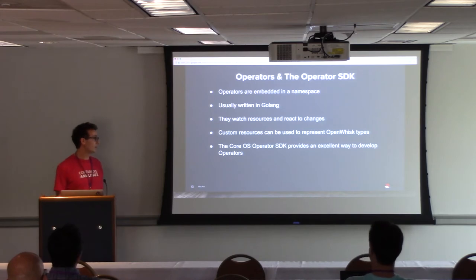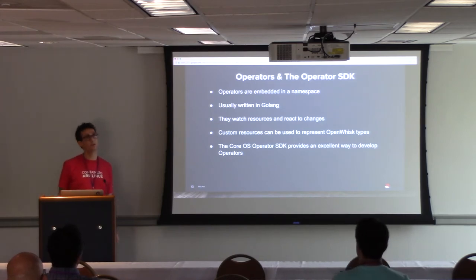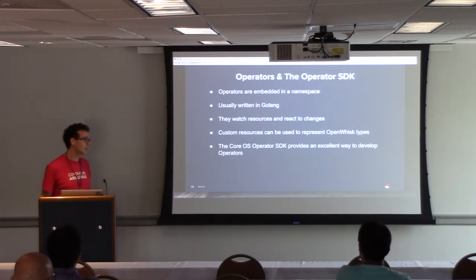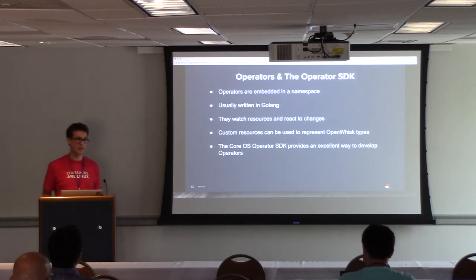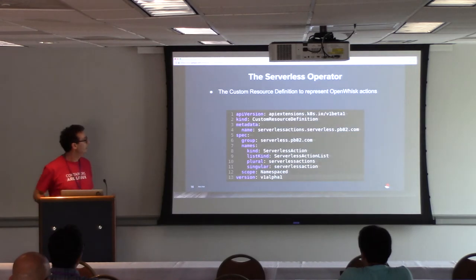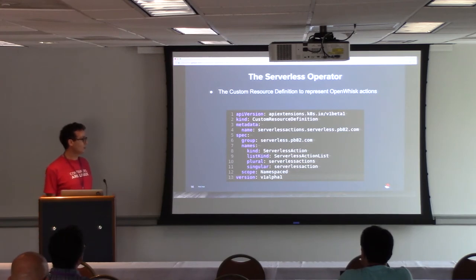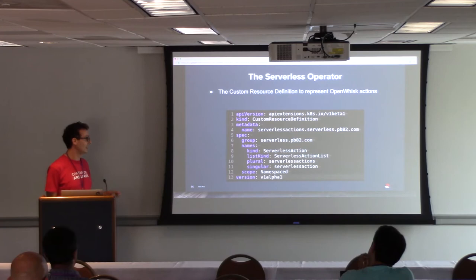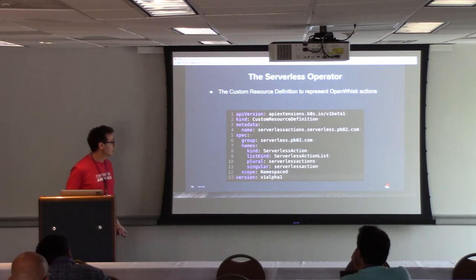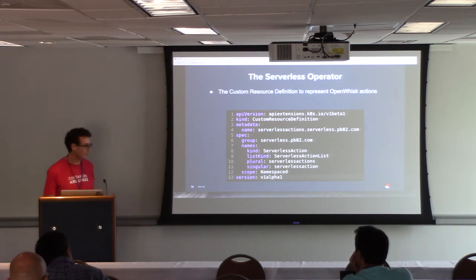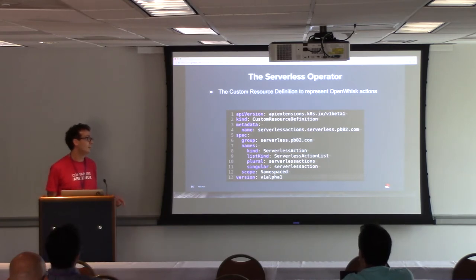There's also the CoreOS Operator SDK, announced pretty recently, which provides a good way to start developing operators. It abstracts away a lot of the complexities of the Kubernetes API. We're going to work on the serverless operator using a custom resource definition. We want a custom resource representing an OpenWhisk action — we name it 'serverless action' and tell OpenShift to make the cluster aware of this new resource type.